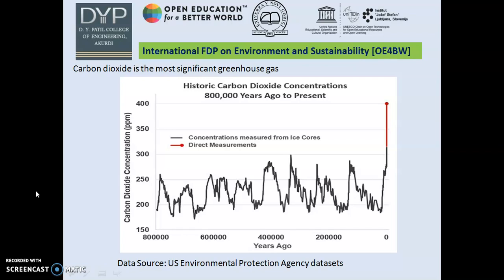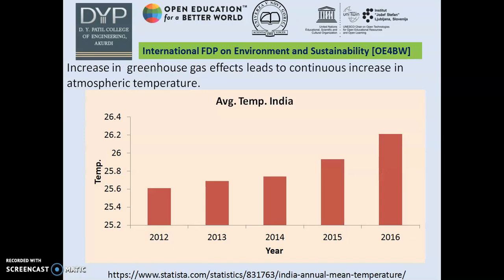Due to the industrial revolution, atmospheric carbon dioxide concentration has increased by about 40%, above 400 ppm. The current CO2 level is around 100 ppm higher than at any time in the last million years. This increase in carbon dioxide and other greenhouse gases results in a continuous increase in temperature. Data on the slide clearly indicates a continuous increase in India's average temperature from 2012 to 2016.